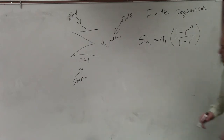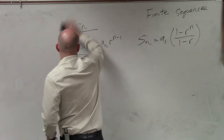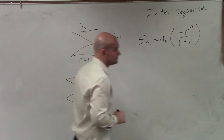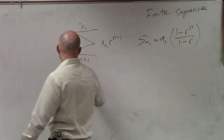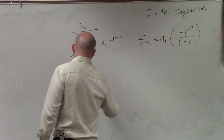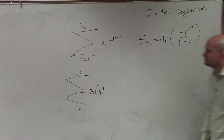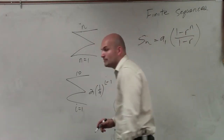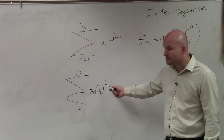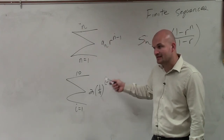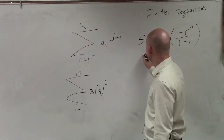Let's do problem 56. So we have sigma notation: sum from i equals 1 to 10 of 2 times (1/4) raised to the i minus 1. If we want to find the sum, you're going to have to plug in 1, 2, 3, 4, 5, 6, 7, 8, 9, 10 and add up all those values if you're doing it manually. Or you can simply plug it into this formula.